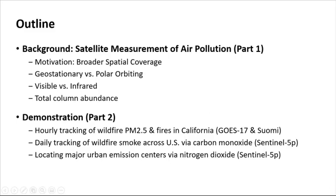In Part 2, which is on a separate YouTube link, we will further demonstrate how satellites can be used to track important air pollution events. We will look at GOES-17 geostationary satellite measurements of wildfire smoke and SUOMI polar orbiting satellite fire detections of the ongoing September 2020 wildfires in California, and daily tracking of wildfire smoke across the U.S. via carbon monoxide measurements from the Sentinel-5P. We will also look at nitrogen dioxide measurements from Sentinel-5P and how these indicate major urban emission centers of nitrogen oxides.